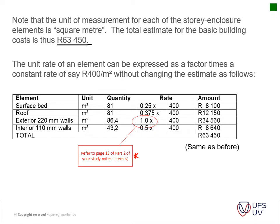If you know the square meter rate is 400 rand per square meter for a factor of one, you can work backwards: dividing 8,100 by 400 gives a factor of 2.5. The example demonstrates that you can arrive at the same answer by multiplying with the factor — the same factor discussed in the theoretical class last week.